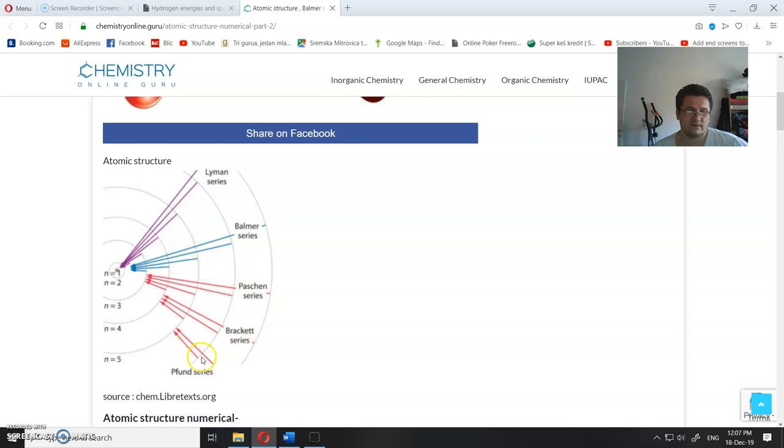Let's see what is Pfund series. When the electron passes from here to here, from the 6th orbit to the 5th orbit, it releases the photon of the energy that is equal to the difference of those two. When it moves from the 7th to the 5th orbit, it emits energy that is equal to that difference and so on and so forth.